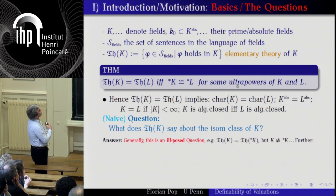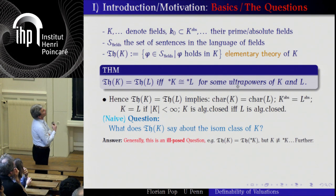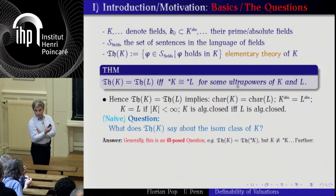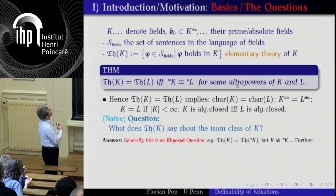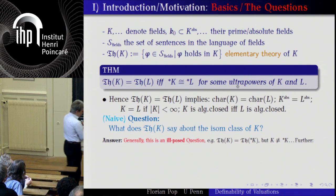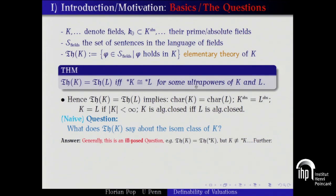In particular, if two fields have the same theory, then the characteristic must be equal, the absolute parts must be equal, and if K is finite then K is finite if and only if L is finite, and if so they are equal. And K is algebraically closed if and only if L is algebraically closed. A naive classification question would be: classify the fields with the same elementary theory up to isomorphism.